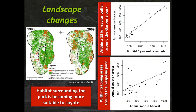One of my grad students is looking at landscape changes around the park. Here you have an image of Gaspésie National Park with a 15 km buffer — in green, major forest polygons, and in orange, clear cuts. Even close to the national park there was a decrease in provincial habitat for caribou, so a park alone cannot sustain the current population. There's a relationship between the proportion of young clear cuts near the park, annual moose harvest, and coyotes harvested — suggesting the surrounding landscape is becoming increasingly suitable for coyotes.